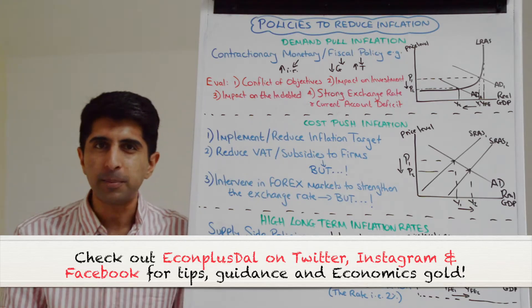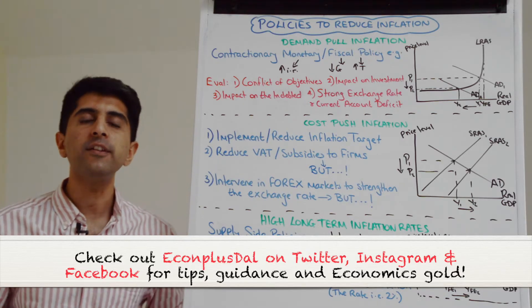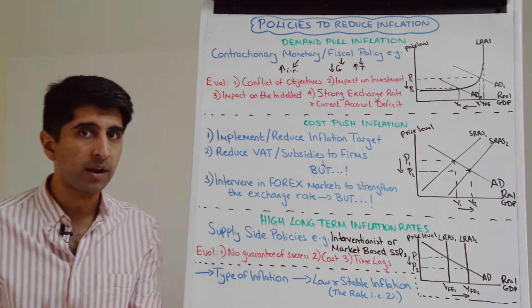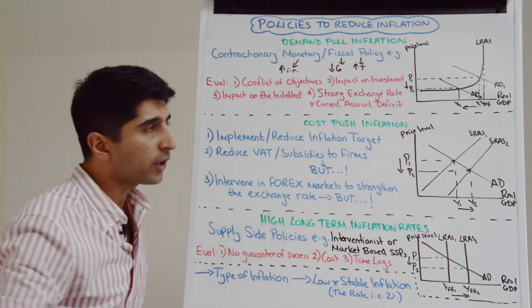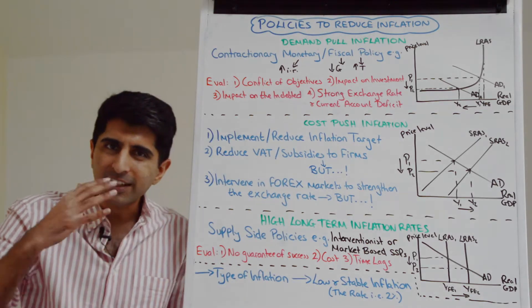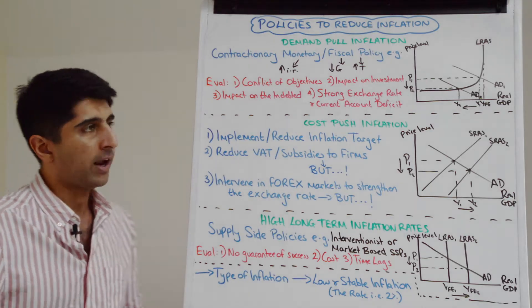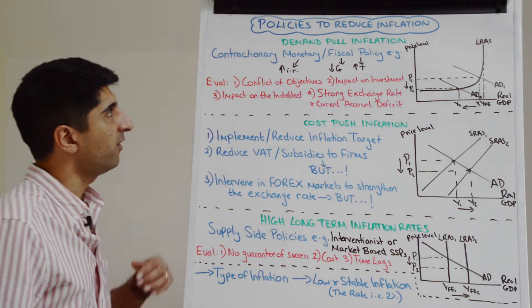So if inflation is beyond that target rate, what policies could be used to bring that rate down? Well it depends very much on the type of inflation that's prevalent in the economy. Let's start by looking at demand pull inflation and saying that demand pull inflation is pushing the inflation rate beyond the target rate. What policies could be used to bring down demand pull inflation?